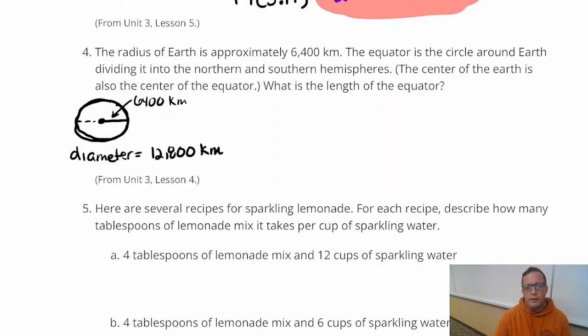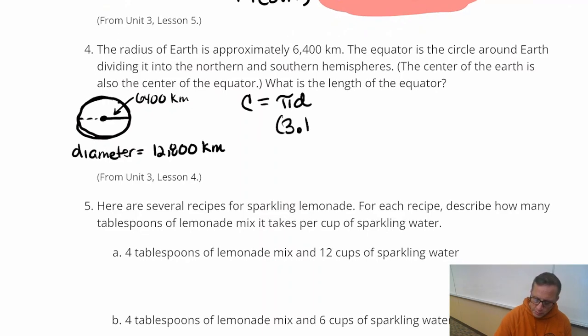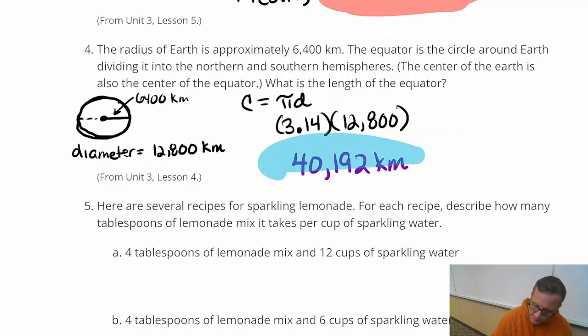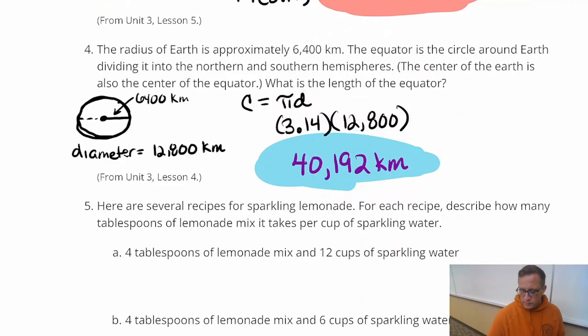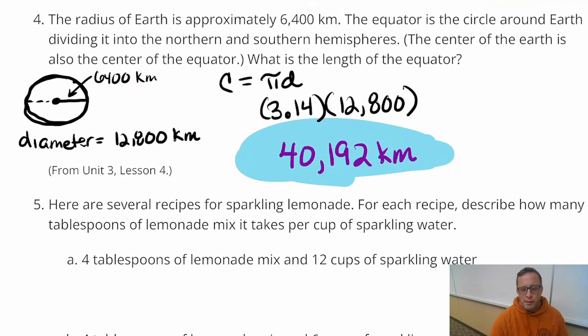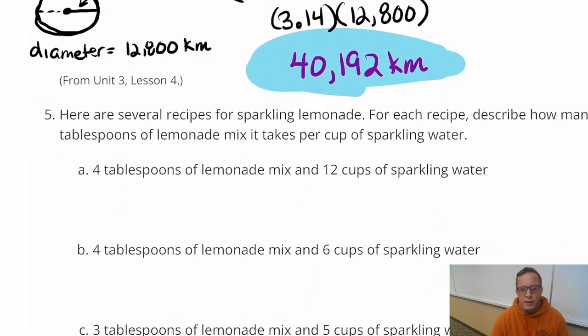Now let's just do circumference formula. Circumference is pi times diameter. So let's just do 3.14 times 12,800. And I got 40,192 kilometers. Which I think is like, I'm estimating here, I think that's like 25,000 miles. I could be wrong. It's somewhere around there.